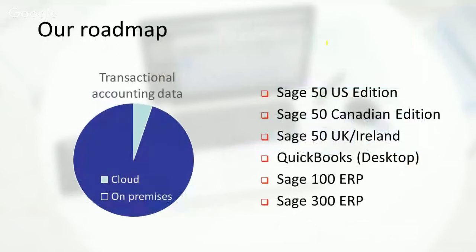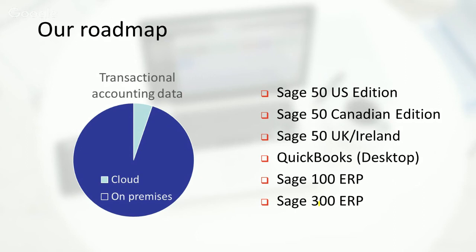We're not just talking about Sage 50 US edition — we're talking about all three variations of Sage 50 plus QuickBooks desktop edition, Sage 100, and Sage 300. We're not particularly interested at the moment in connecting to QuickBooks Online, because typically the size of company using QuickBooks Online tends to be very small and doesn't tend to be a very interesting market for developers of applications that use transactional accounting data.